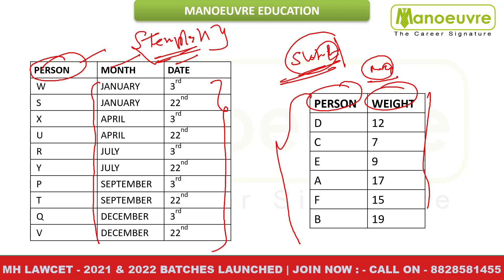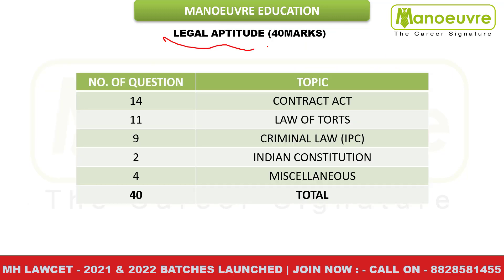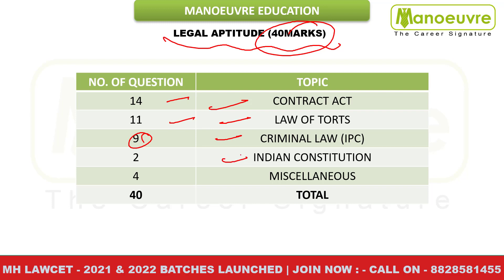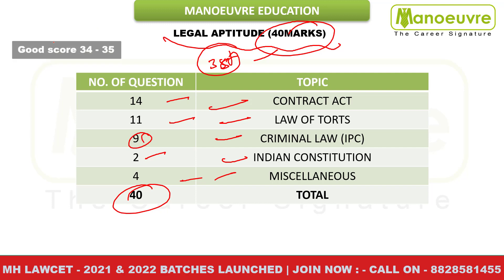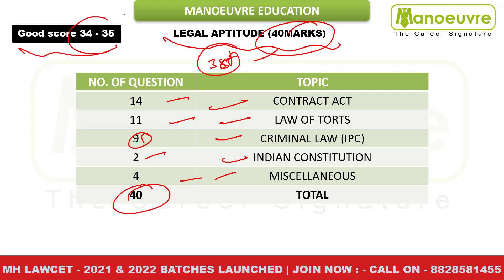Coming to the highly scoring section — legal aptitude, 40 questions for 40 marks. Contracts: 14 questions. Law of Torts: approximately 11. IPC (criminal law): 9 questions. Indian Constitution: 2, and miscellaneous/statutory questions: 4. Most students I spoke to said that 35 plus toh kahi nahi gaya in legal aptitude — it was the best section for them. But the good score for this section is 34 to 35 marks.